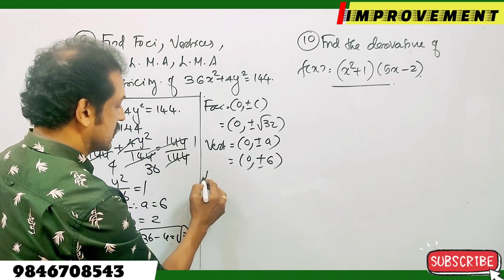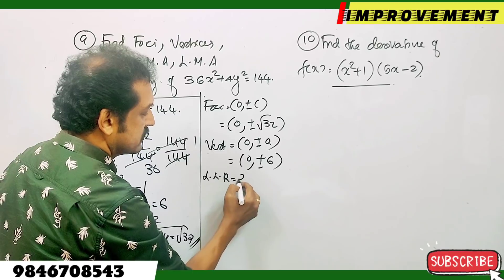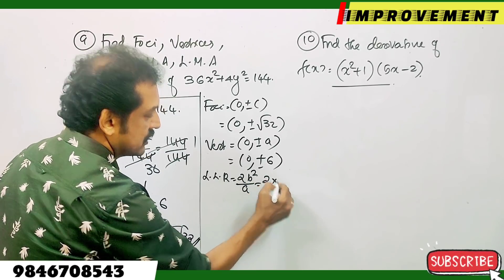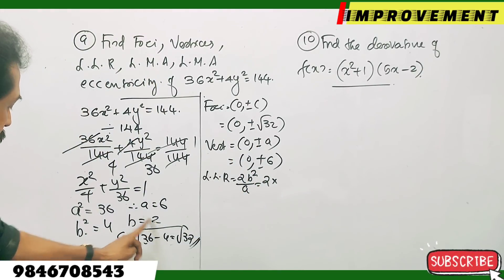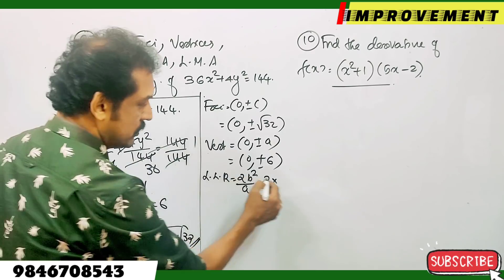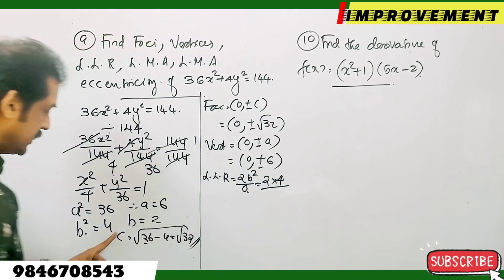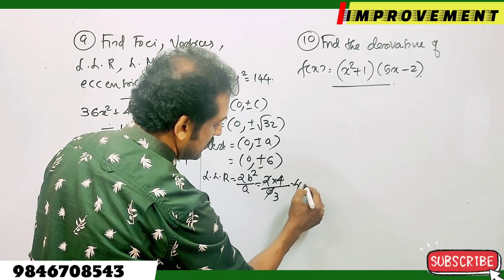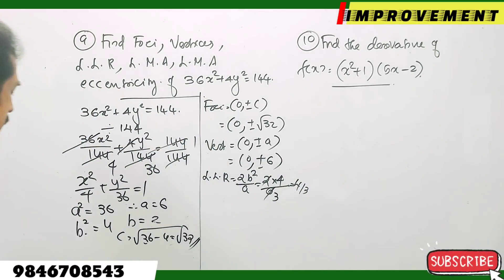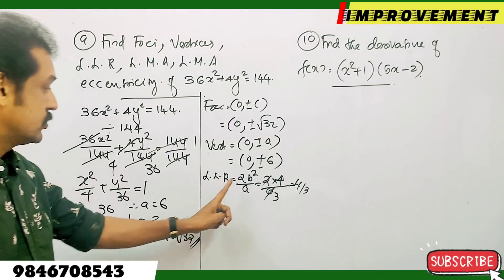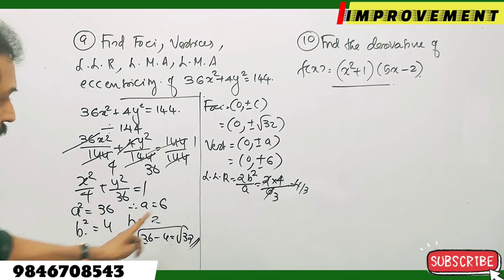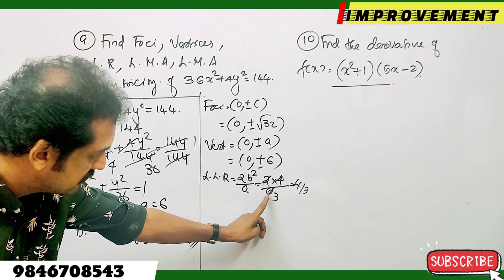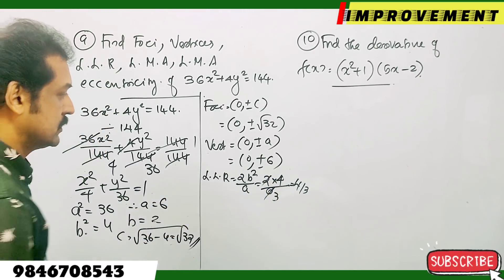Length of latus rectum: formula is 2b squared by a. That is 2 times 4 divided by 6, which simplifies to 8 by 6, giving 4 by 3. Length of major axis equals 2a equals 2 times 6 equals 12.